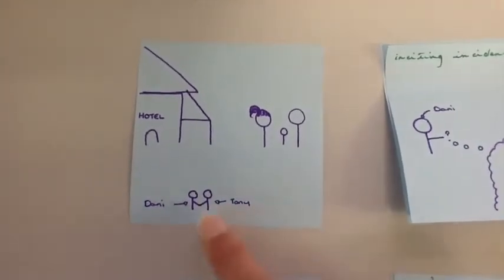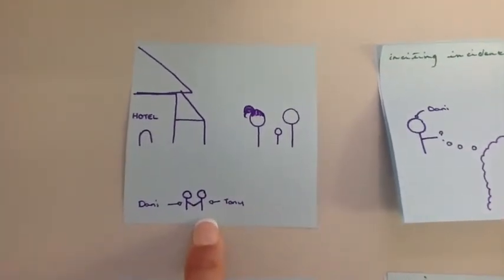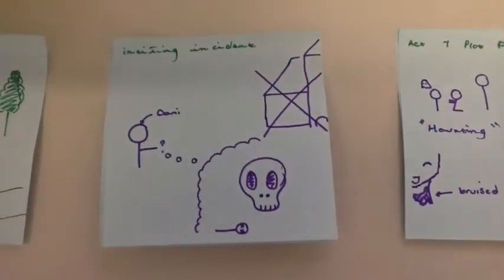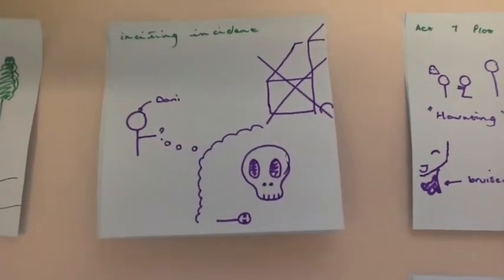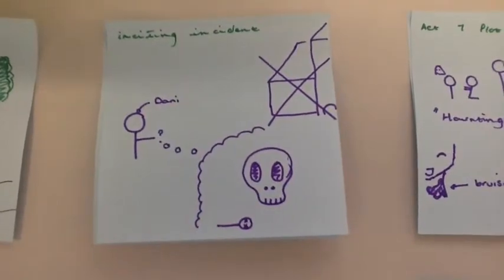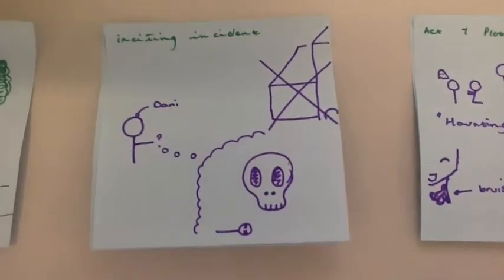We see that Danny has an imaginary friend called Tony. In the inciting incident we are shown that Tony shows Danny the past of the hotel and the horrific incidents that happened. Danny ends up fainting.